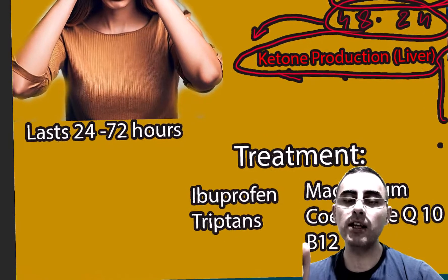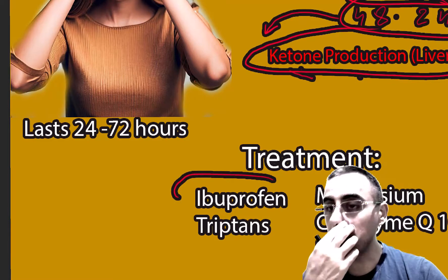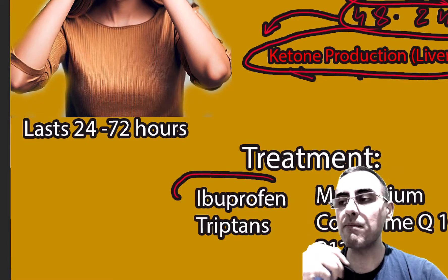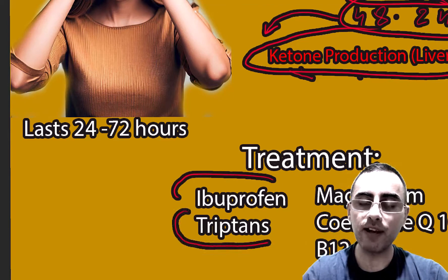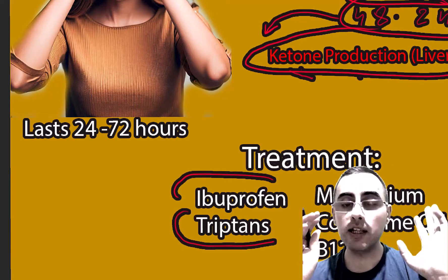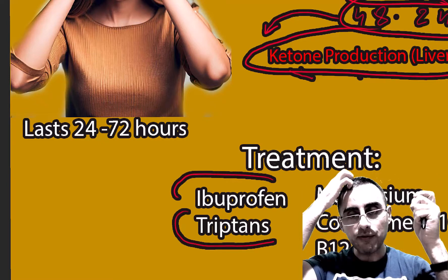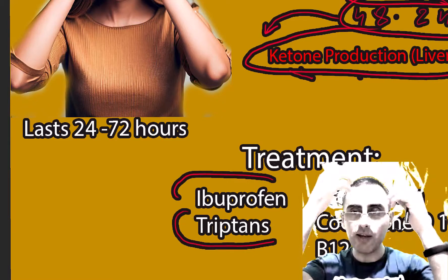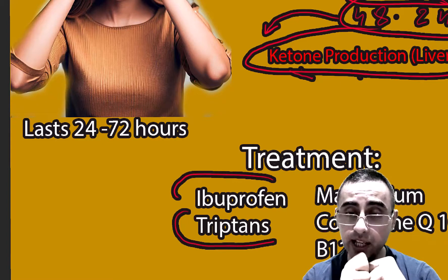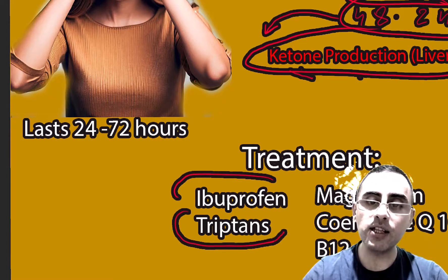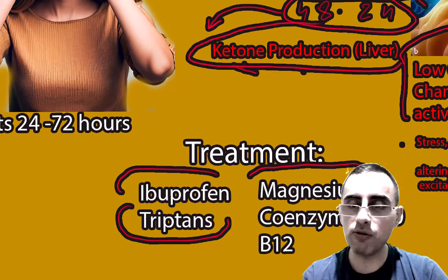Now let's talk about treatment. Ibuprofen is usually effective. If the person has a migraine history, fasting can promote and trigger migraine — in such cases, triptans are effective. Migraine is characterized by headache on half of the head with pulsating or throbbing pain, and triptans are the appropriate treatment in that case.